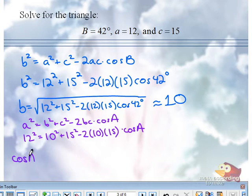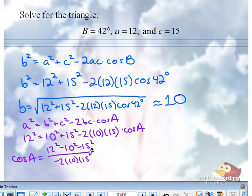So after subtracting and dividing as needed, you'll get the cosine of A is 12 squared minus 10 squared minus 15 squared, all over negative 2 times 10 times 15. Glorious. How do we finish solving for A? Yeah, we're going to do the cosine inverse.